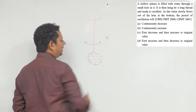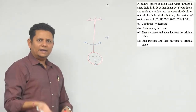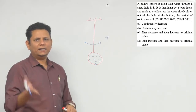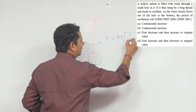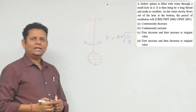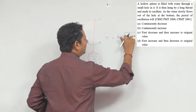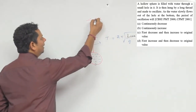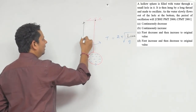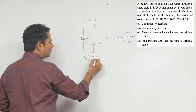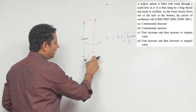हमारा जो time period T है, उसको हम लिखते हैं T = 2π√(L/g)। यह formula लोगों ने याद तो कर रखा होता है लेकिन यहाँ थोड़ी understanding की कमी होती है। यह जो L है, यह actually L_cm है — आपके hinge point से आपका center of mass कितनी दूरी पर है। तो L_cm यानि length to center of mass — यह आपके center of mass की location है।